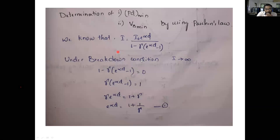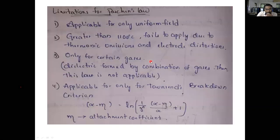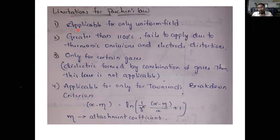Now we will discuss limitations of Paschen's curve. First, it is applicable only for uniform field — same as Townsend's theory, which is applicable only for uniform field. It is not applicable for non-uniform electric fields.